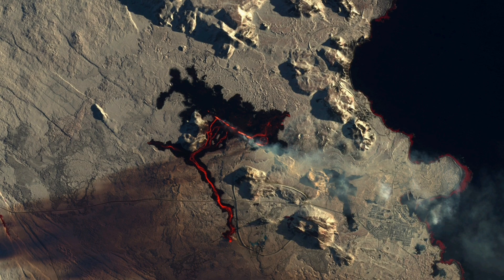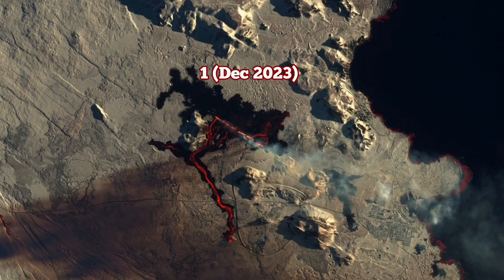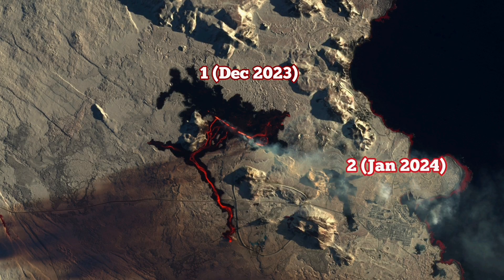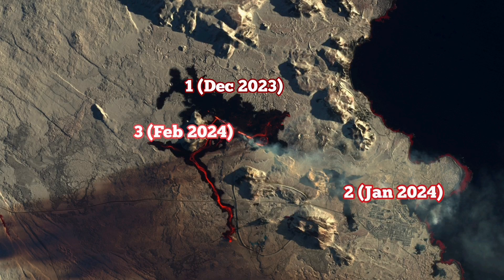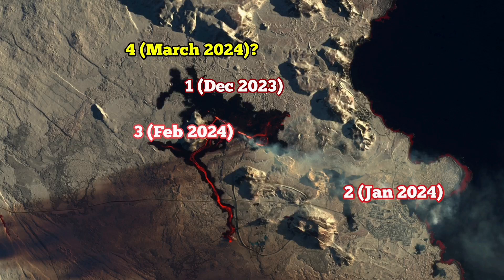The location of December 1st, 2023 was near the Sundhnúkar crater, then north of Grimdavík between Hagafell and Grimdavík in January 2024, February 2024 again in Sundhnúkar crater. I believe in March 2024 we will have another eruption to the north of the current location.